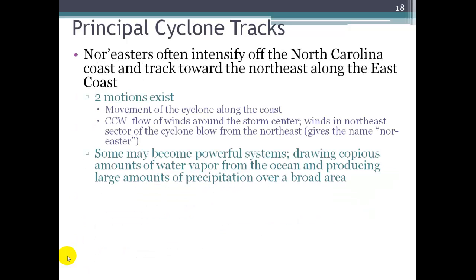A special type of storm that you probably have heard of is called a nor'easter. These happen off of the eastern seaboard, off of the North Carolina coast, and they tend to track toward the northeast along the east coast. So there's two things going on with a nor'easter. There's the movement of the cyclone as it kind of makes its way across the United States land and crosses over into the Atlantic Ocean. So there's that movement, and then there's the counterclockwise flow of the winds around the storm center.